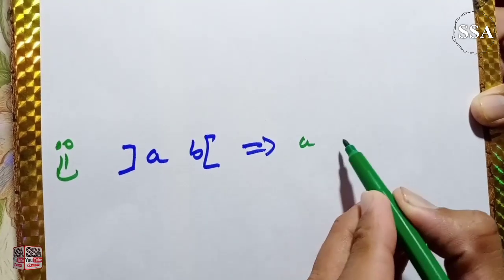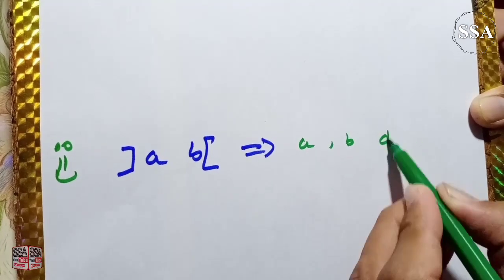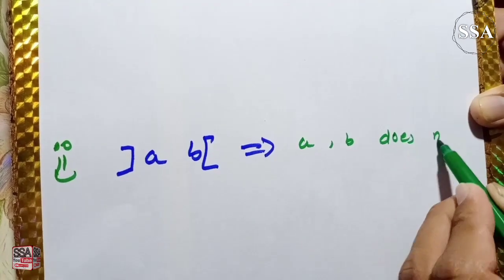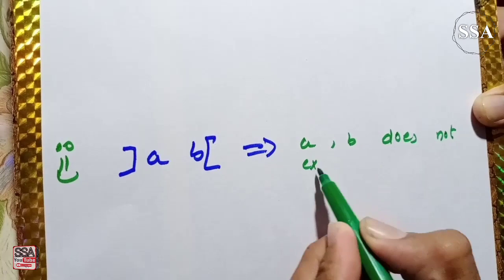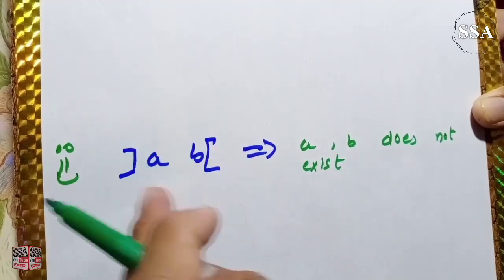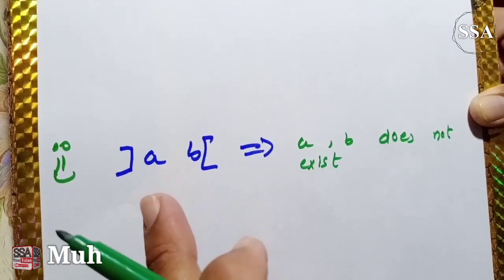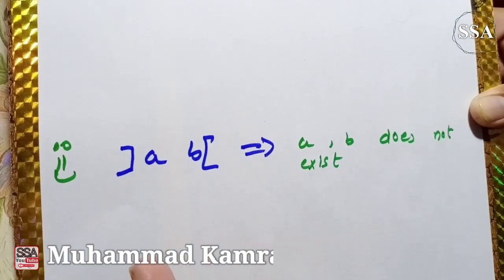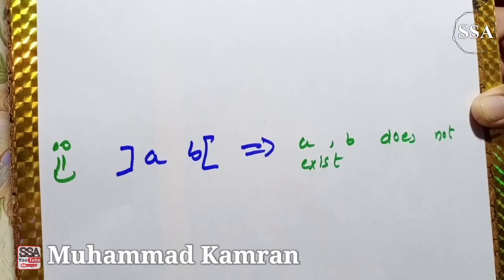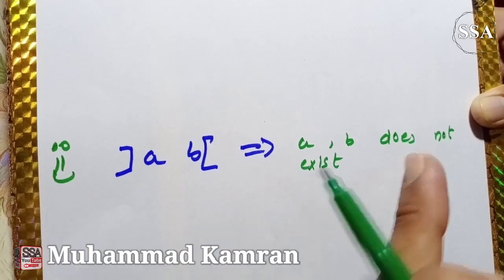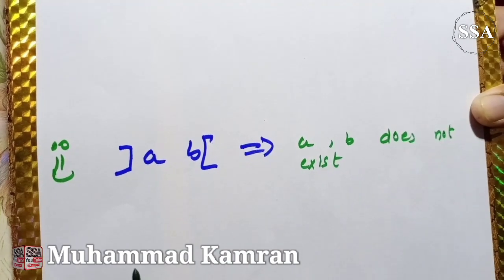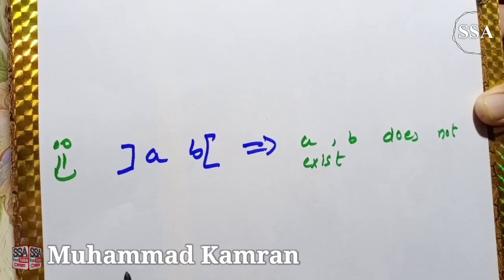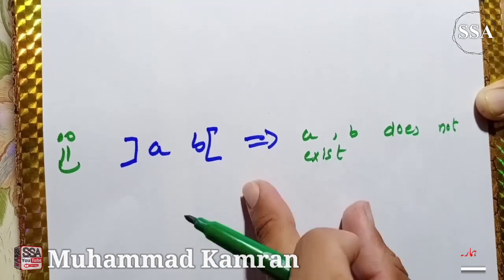In open interval, a or b do not exist, but the values between them exist. In closed interval, a or b are included, but in open interval, a or b are not included. This is the concept of open and closed interval. In the next lecture I'll use it.